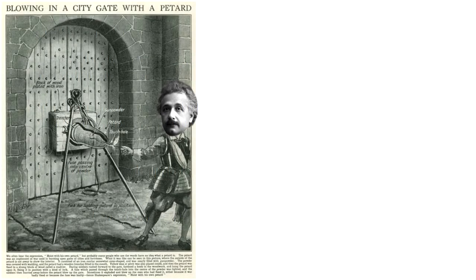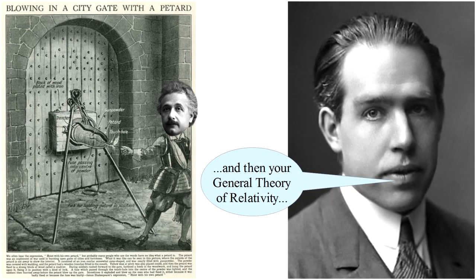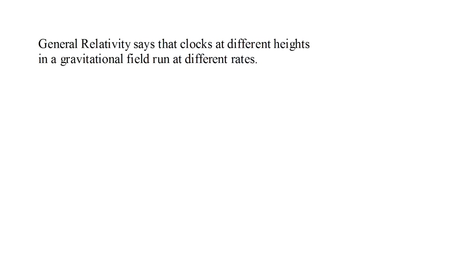Now Einstein is hoist upon his own petard. Bohr invokes the general theory of relativity. According to relativity, clocks at different heights in a gravitational field run at different rates. If one clock is at x equals 0, and a second is at x equals delta x, and the rate of the first is taken to be 1, then the second runs at a rate 1 plus g delta x over c squared.